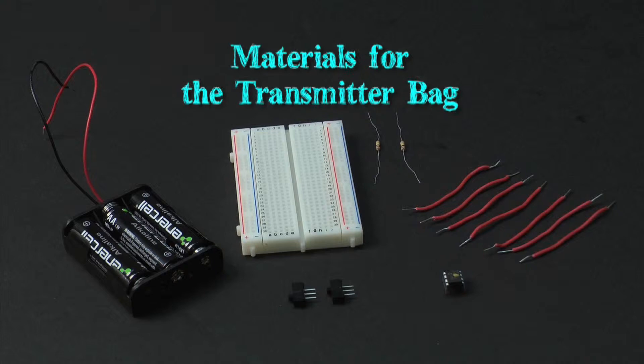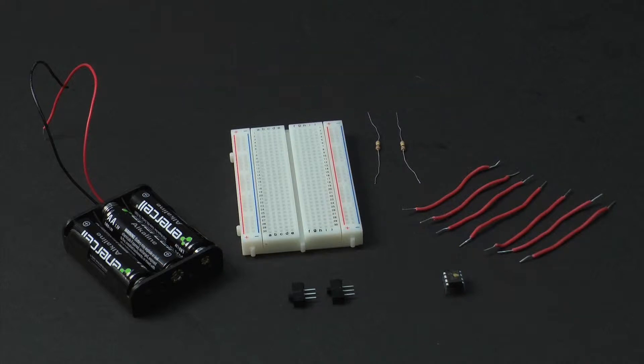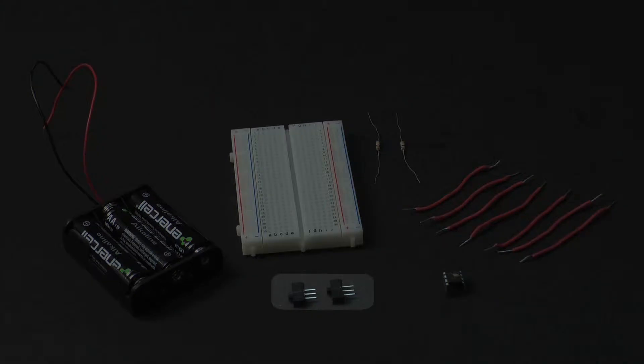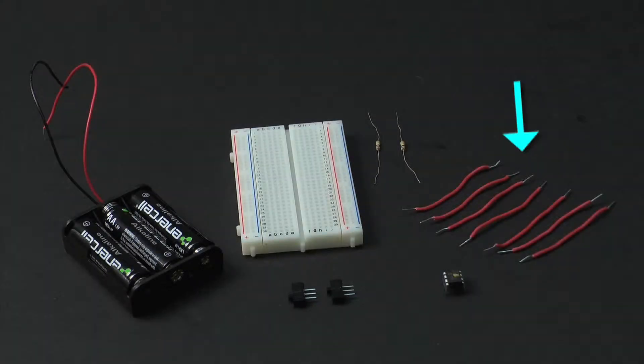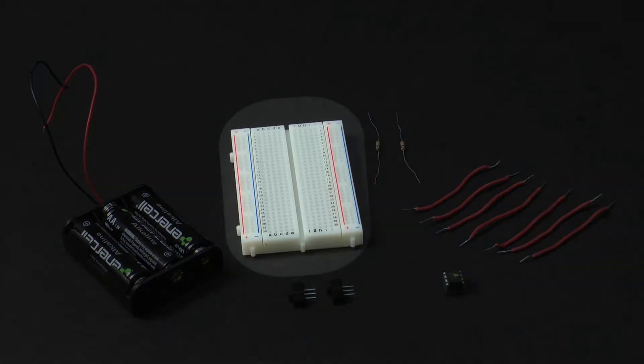In the transmitter bag, there should be one encoder chip with a gold dot, two switches, seven 2-inch jumper wires, two resistors, one battery pack for three AA batteries, and one breadboard.